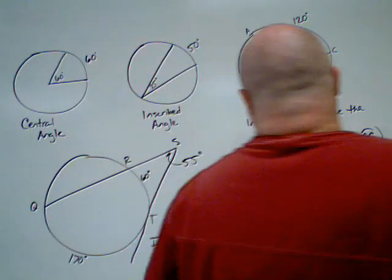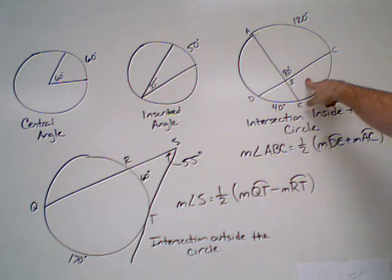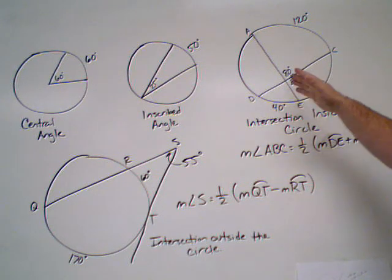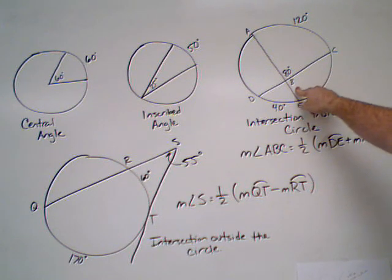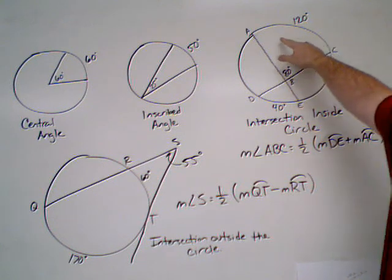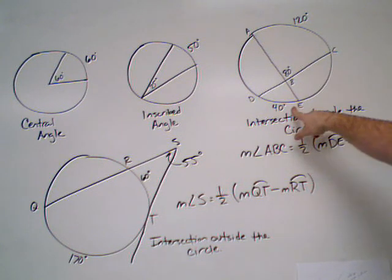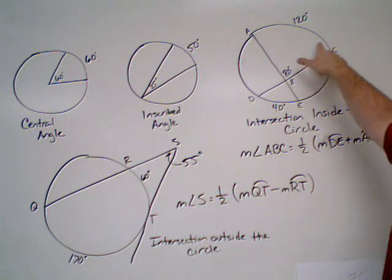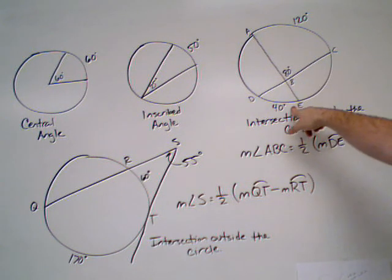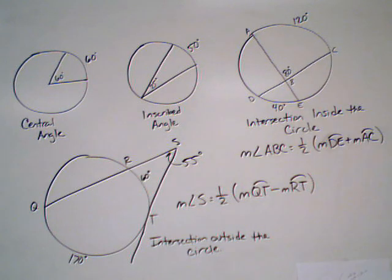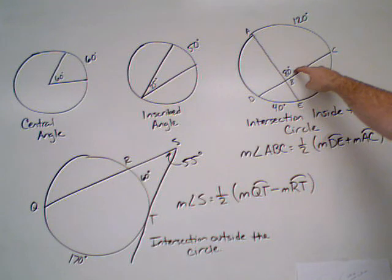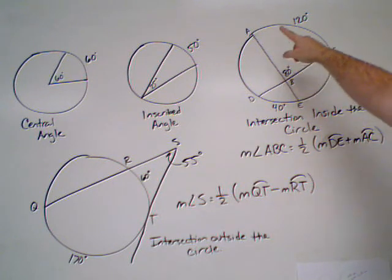The next one is where we have two chords—they can also be secants if they're extended beyond the boundary of the circle—when they intersect inside the circle. You're going to have two intercepted arcs. We're looking at arc AC and arc DE. What you have to do is add these together and then divide by two, and that gives you the measure of the angle created inside.